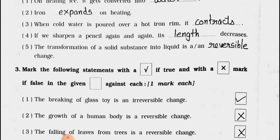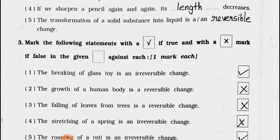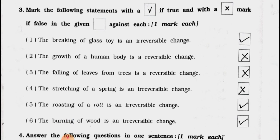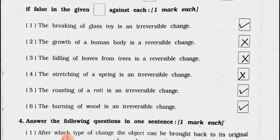Now see main three. Mark the following statements with a right mark if true and a wrong mark if false. One mark each. Number 1: The breaking of a glass toy is an irreversible change — true. Number 2: The growth of a human body is a reversible change — false.